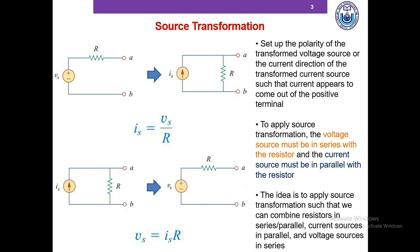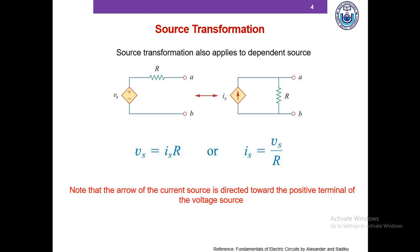This will become more clear when we solve the example problems later. Source transformation also applies to dependent sources. A dependent voltage source in series with resistor R can be transformed into a dependent current source in parallel with the same resistor R, where Vs equals Is times R and Is equals Vs divided by R. However, a dependent source cannot be transformed into an independent source and vice versa.